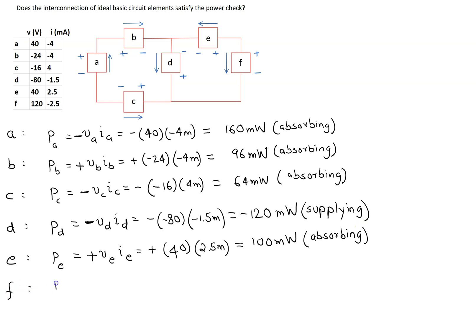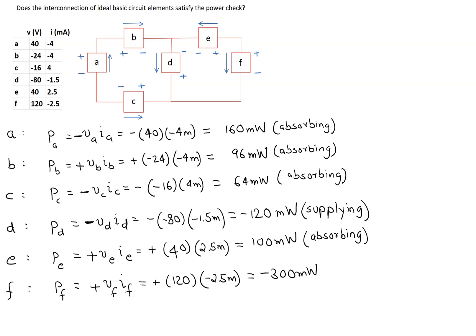For the final element, the power is given by VF times IF. Looking at element F, the reference current is entering the terminal marked positive. So we use the power formula with a plus sign. Substituting the values, this gives us a negative answer of 300 milliwatts. So this means element F is also supplying power.